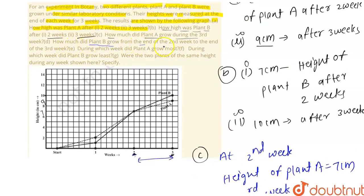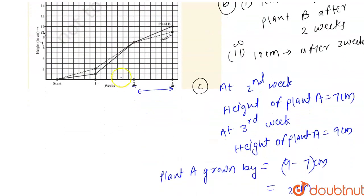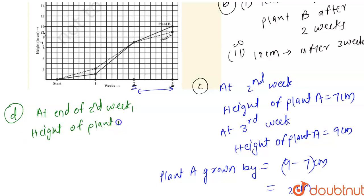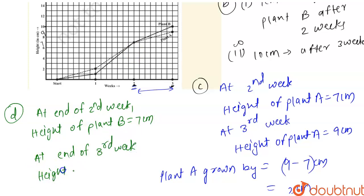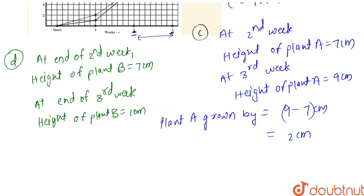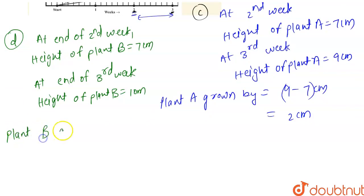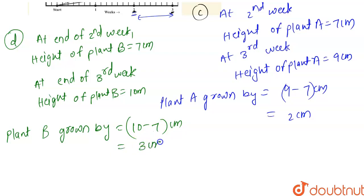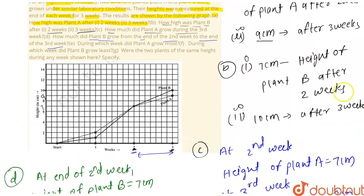For Part D: how much did Plant B grow from the end of the second week to the end of the third week? At the end of the second week, the height of Plant B is 7 centimeters. At the end of the third week, the height of Plant B is 10 centimeters. So Plant B grew by 10 minus 7, which equals 3 centimeters.